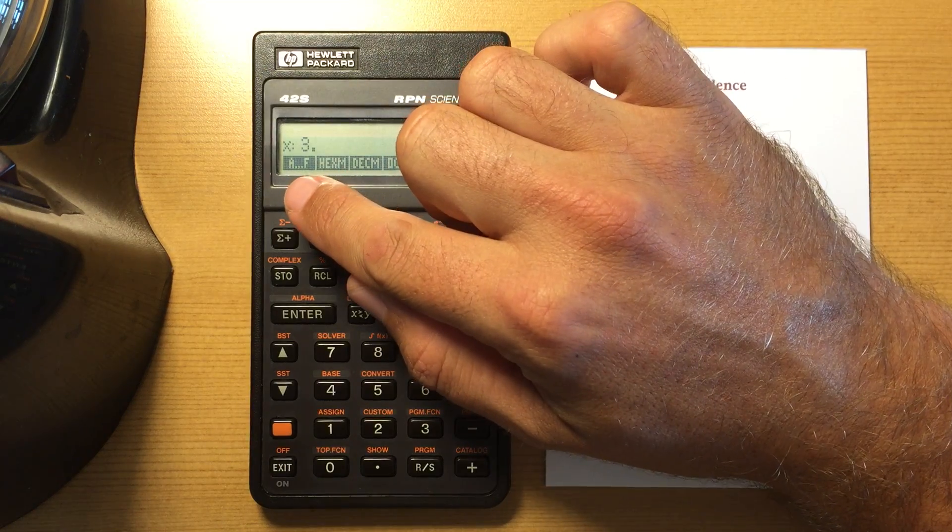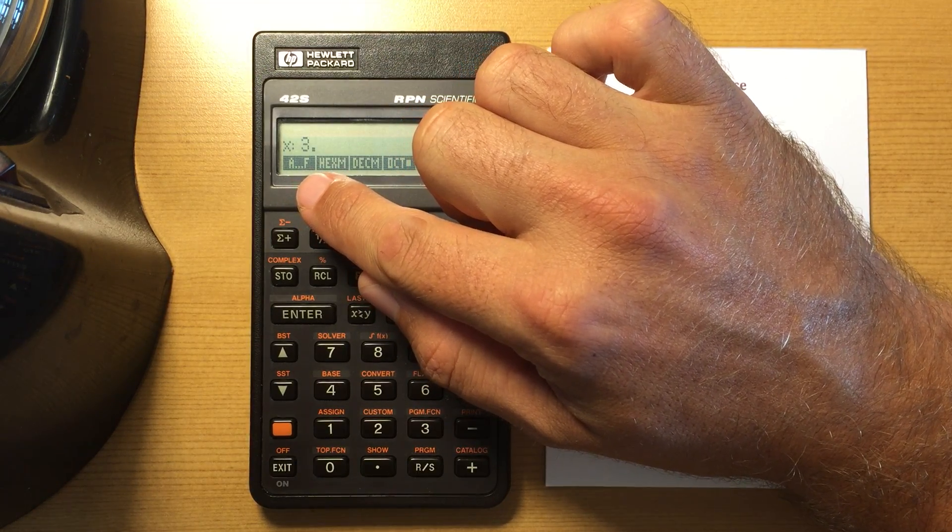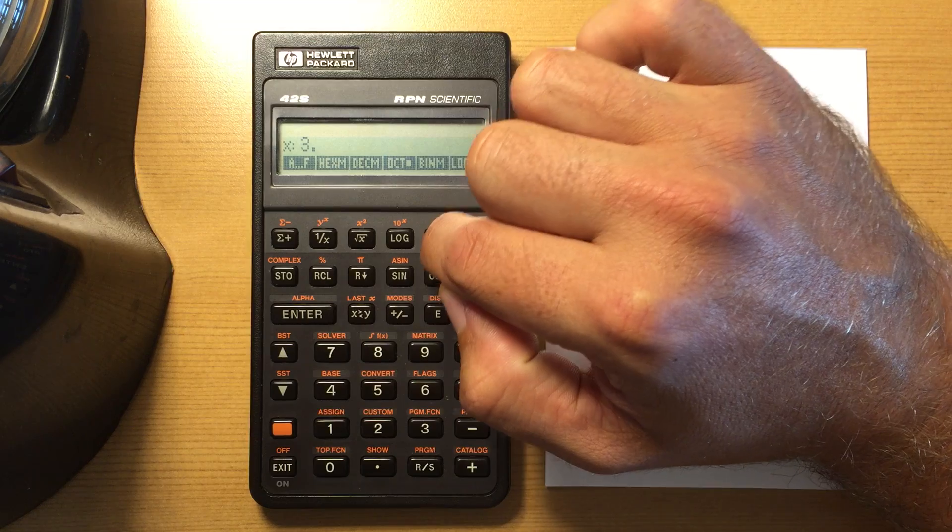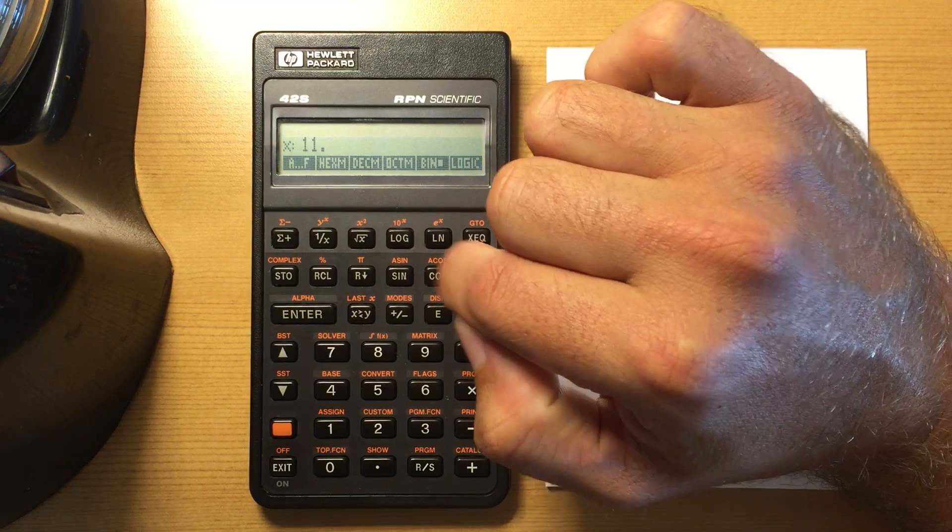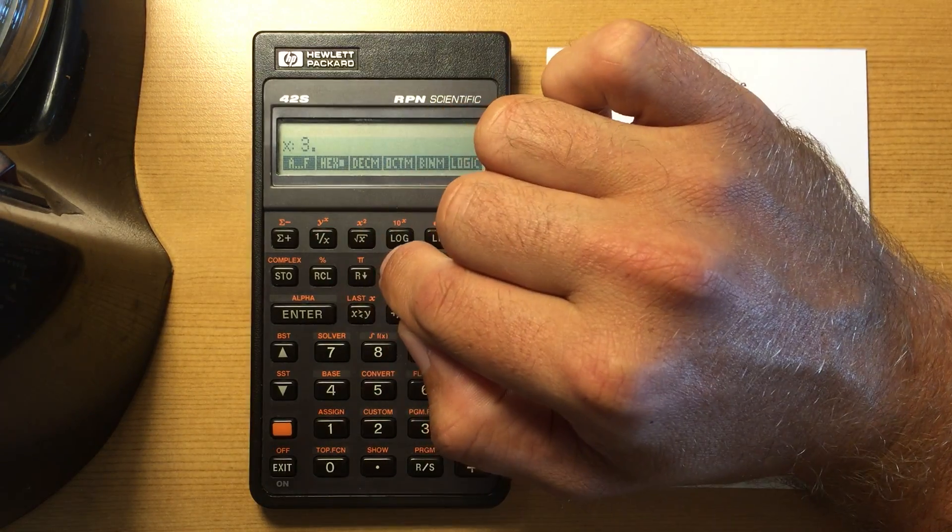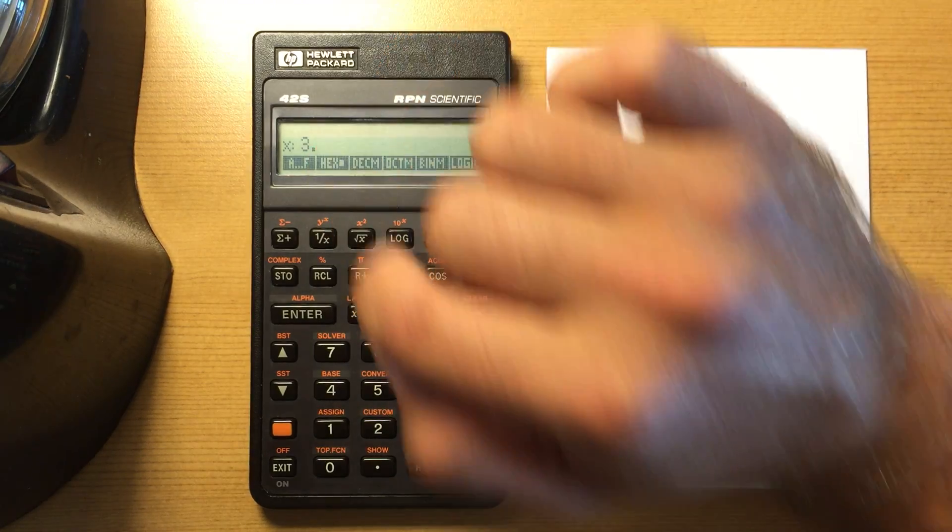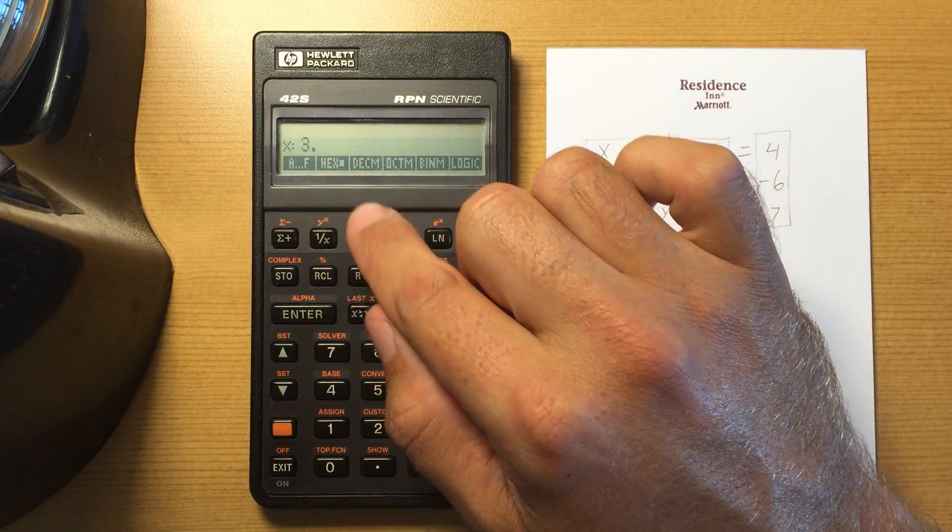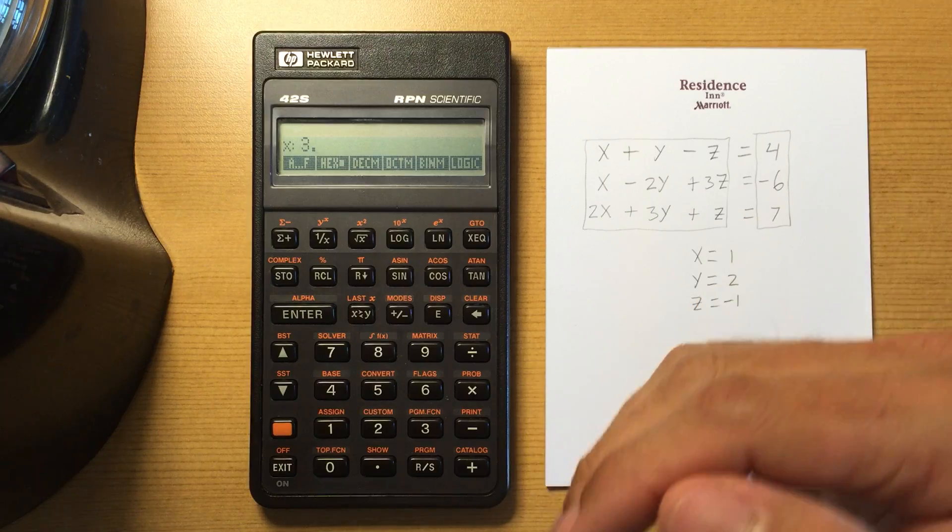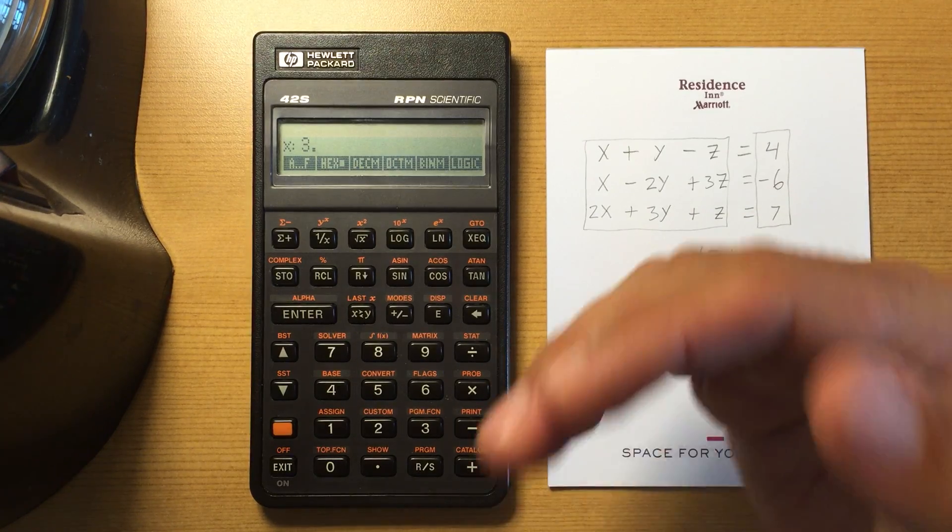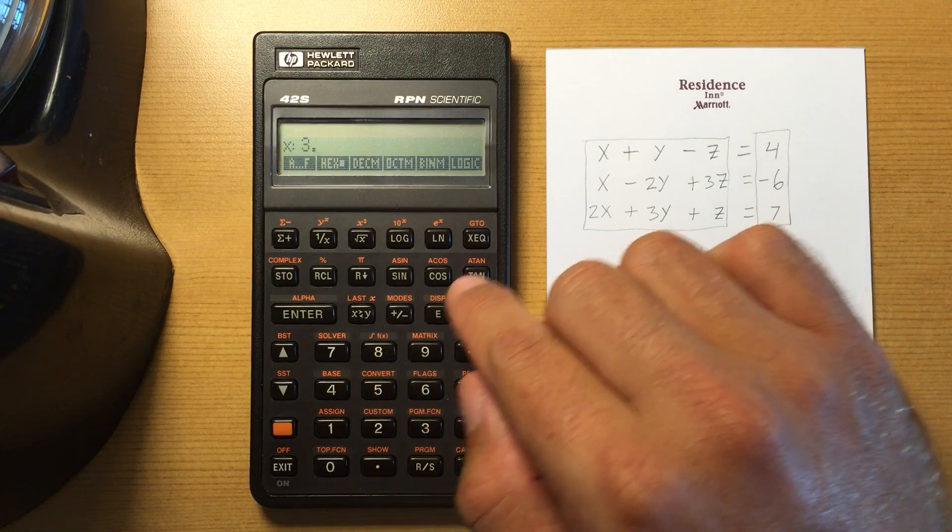It only shows the integer before the decimal place, the mantissa: binary, hexadecimal. But notice that it shows a decimal point after it, showing that there is more stored internally, but it's not displaying it.